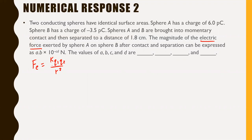K is a constant — 8.99 times 10 to the 9 — and it's on your formula sheet. Now Q1 and Q2 are going to be different than what the question directly gives us. Sphere A has a charge of 6.0 PC. PC stands for picocoulombs — not microcoulombs. Pico is on your formula sheet; P is pico, which is 10 to the negative 12.